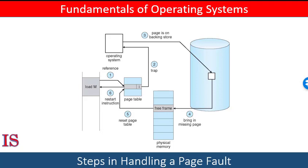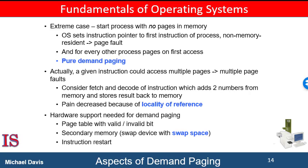The process can now access the page as though it had always been in memory. In the extreme case, we can start executing a process with no pages in memory. When the OS sets the instruction pointer to the first instruction, which is on a non-memory-resident page, the process immediately faults. After that page is brought into memory, it continues executing, faulting as necessary until every needed page is in memory. At that point, there is no need for more faults. This scheme is pure demand paging — never bring a page into memory until it is required.